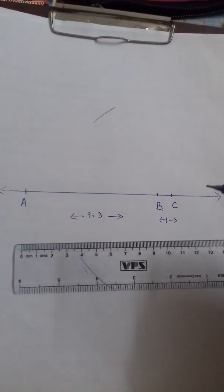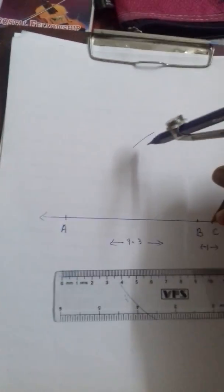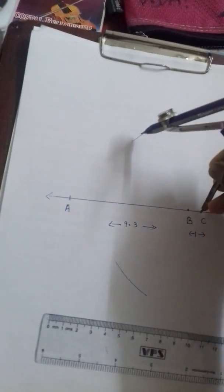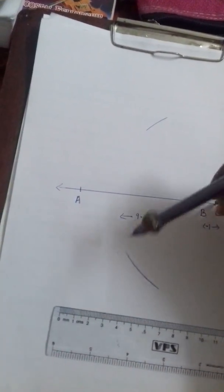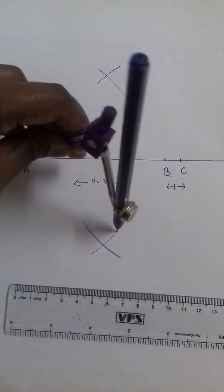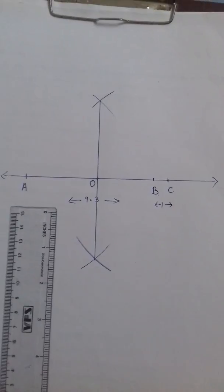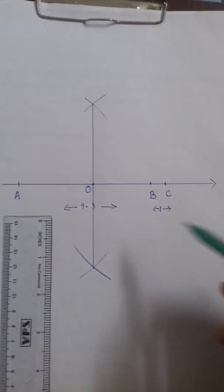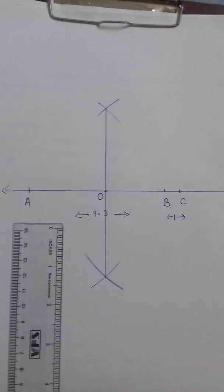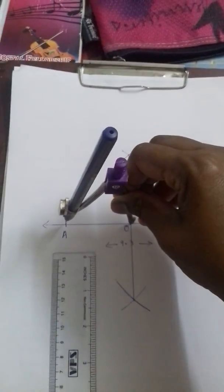Now draw the perpendicular bisector of AC. So from C, you open your compass more than half and draw an arc above and below the line segment and from A. Then from A, you have to intersect it and join this intersecting point. While joining, it will meet the line at a point which is the midpoint of AC. Let us mark it as O. Now with centre O and radius OA or OC, draw a semi-circle.